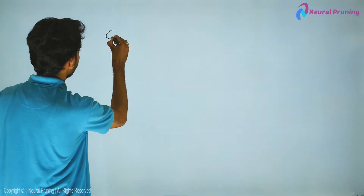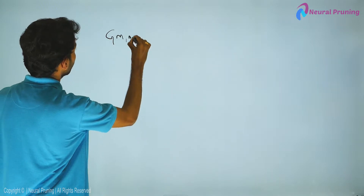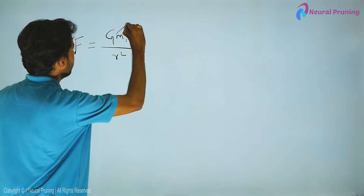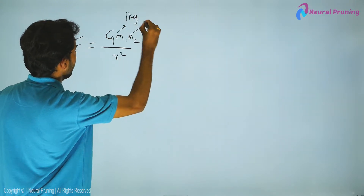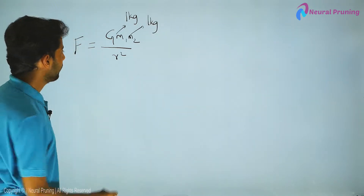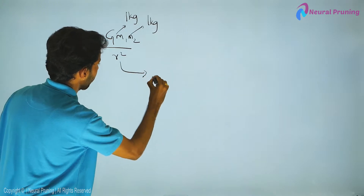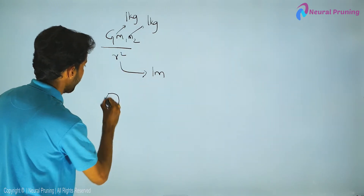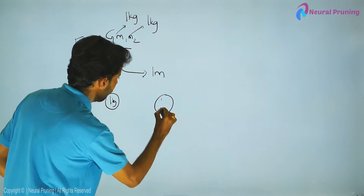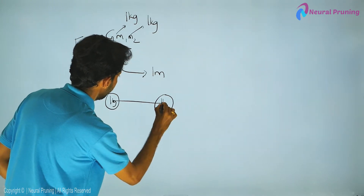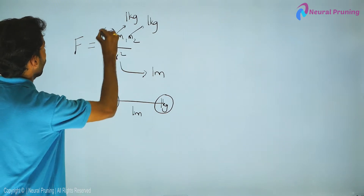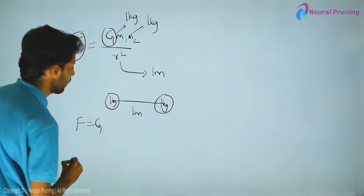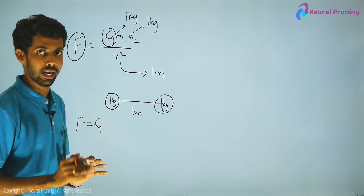Looking at the equation G × m₁ × m₂ / r² = F again: if both masses equal 1 kg (unit mass) and the distance between them is 1 meter (unit distance), then the value of G equals the value of F — not in direction but only in magnitude.